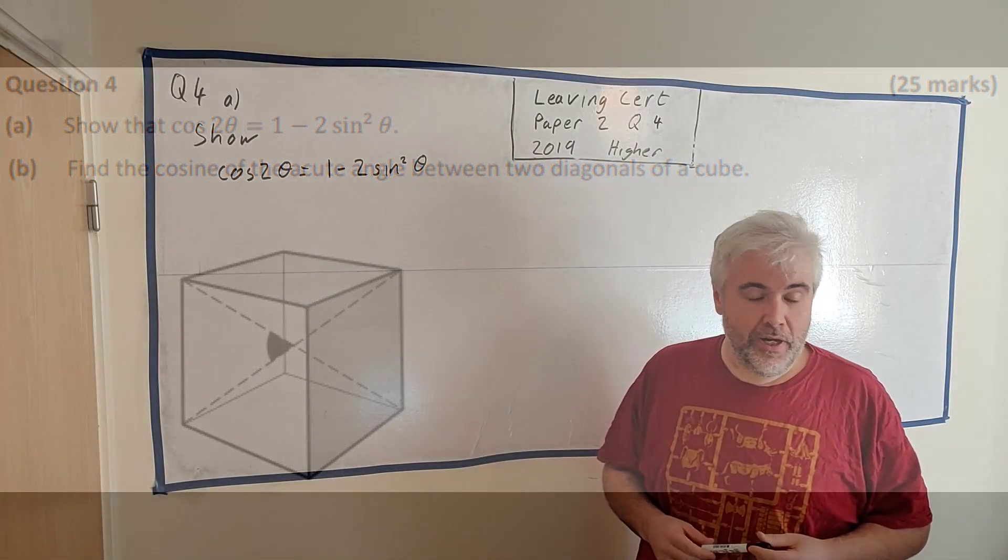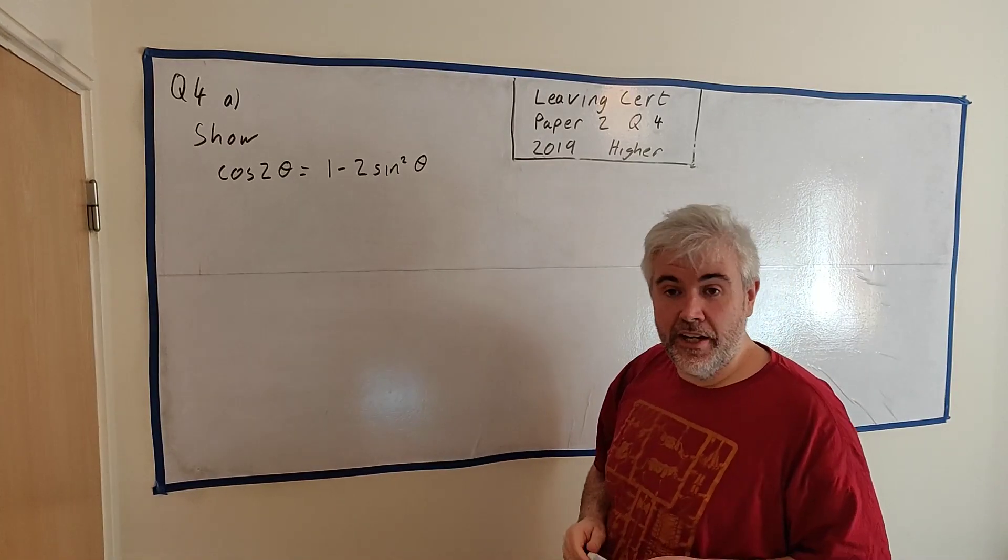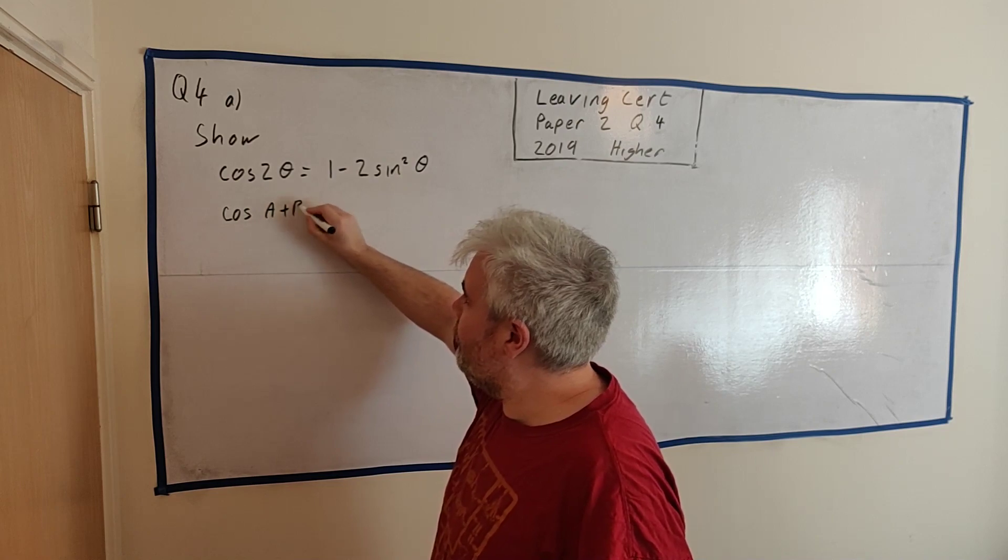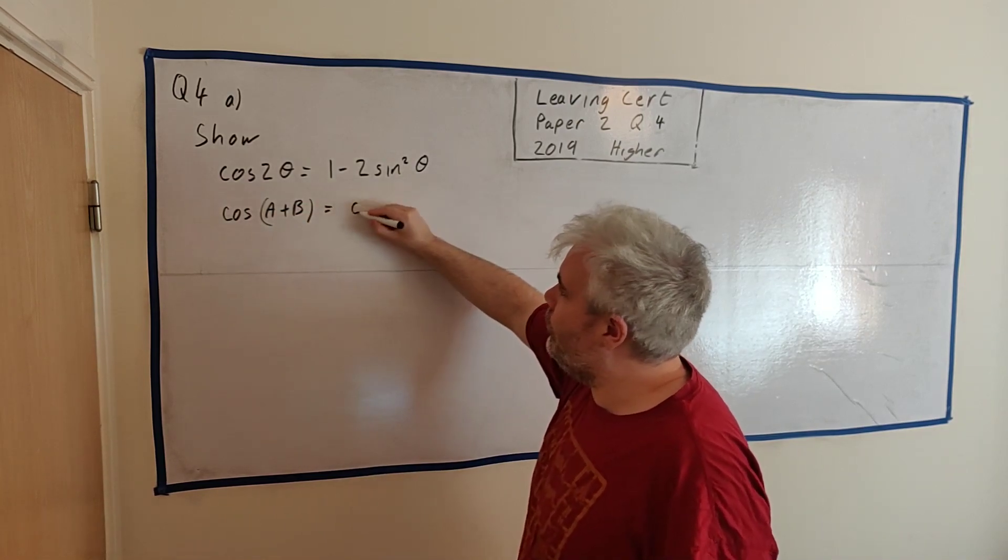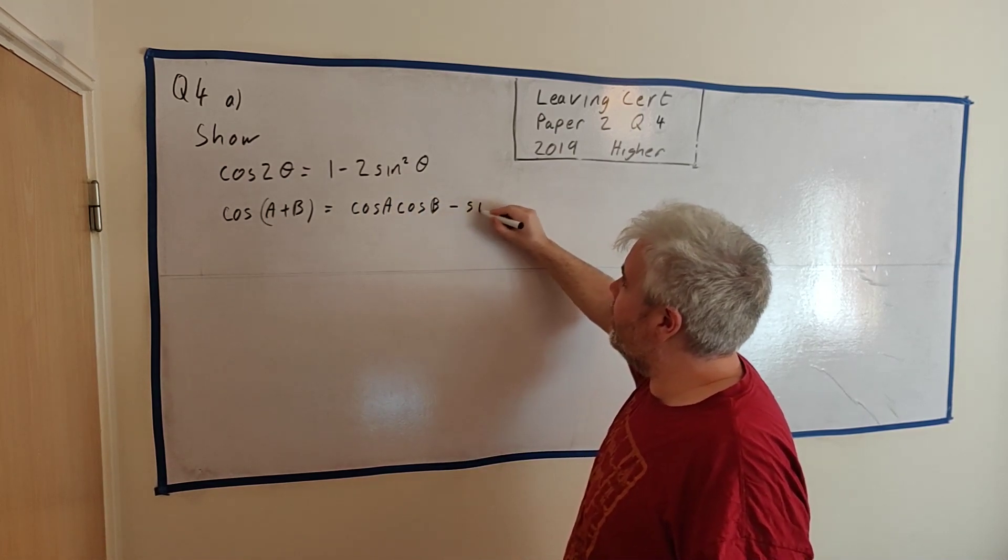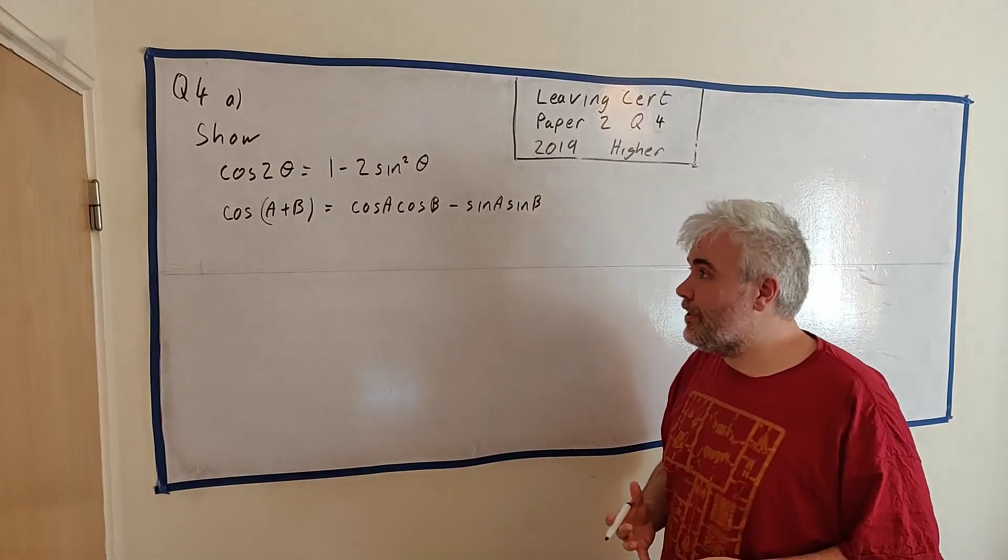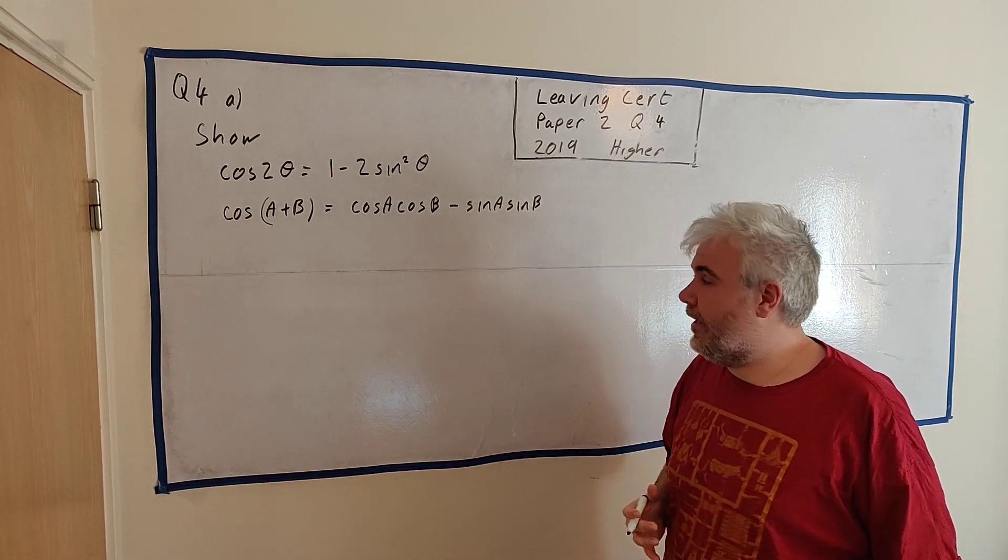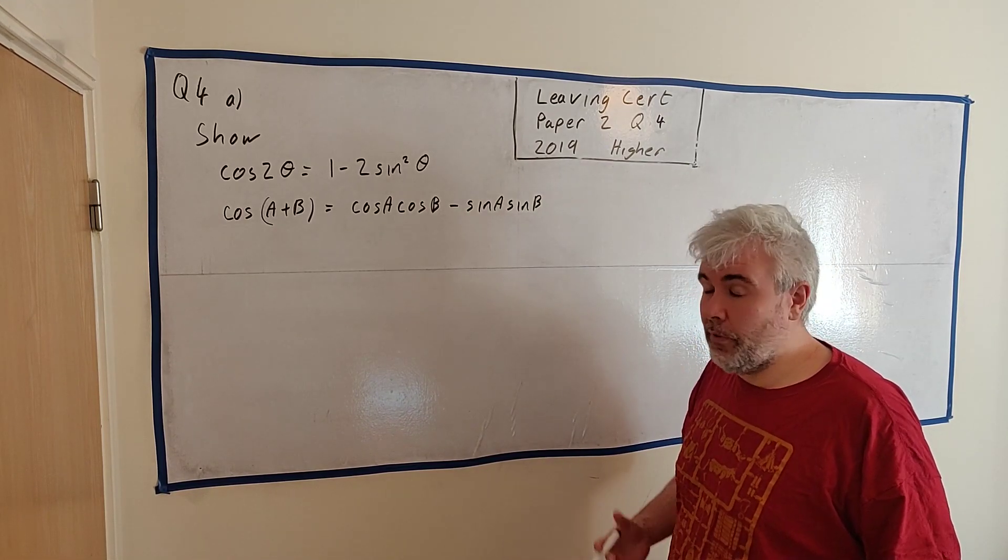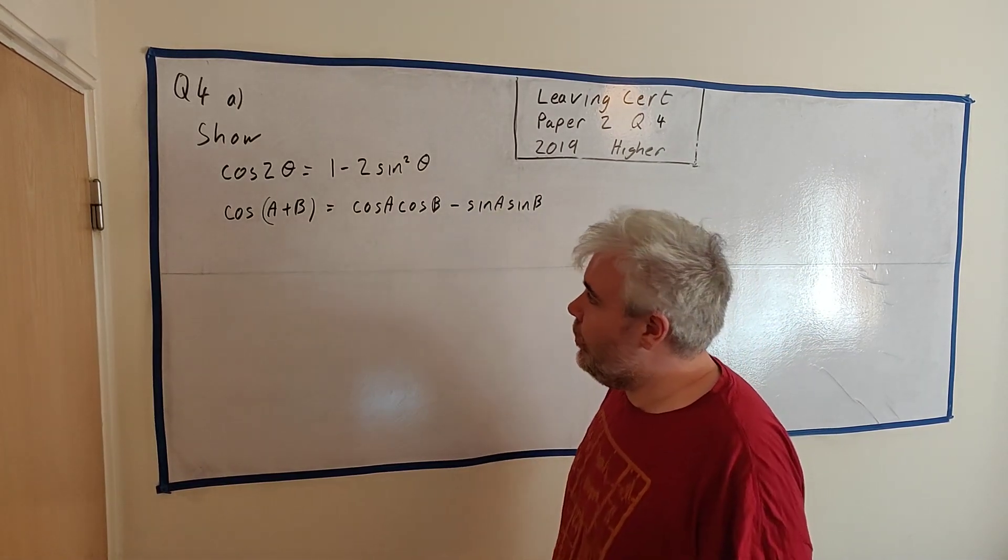So I'll go ahead and start with part A. They're asking us to show that the cosine of 2 theta is equal to 1 minus 2 sine squared theta. We're allowed to use that the cosine of A plus B is equal to the cosine of A multiplied by the cosine of B minus the sine of A multiplied by the sine of B. We have proven this identity within our course. They give us this in our formula table, so we can go ahead and use it.